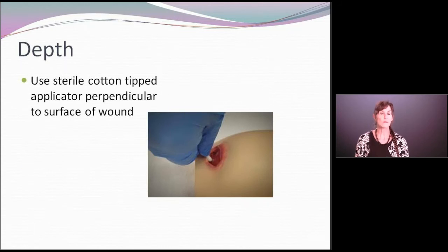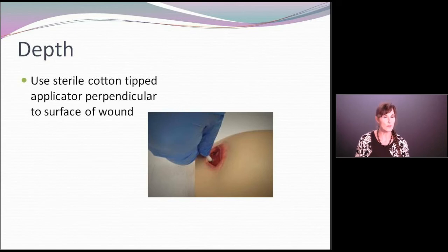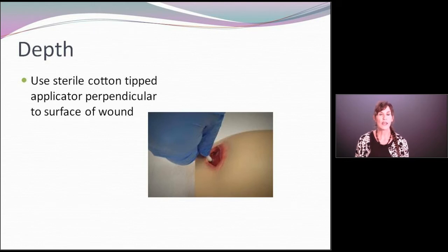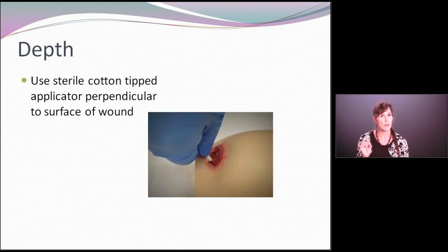The depth of the wound. Many of these chronic wounds are not two-dimensional — we have length, we have width, and we also have depth. When measuring the depth of the wound, the best way to do that is to use a sterile, cotton-tipped applicator, insert it perpendicularly into the wound, determine how deep that wound goes, and measure that.